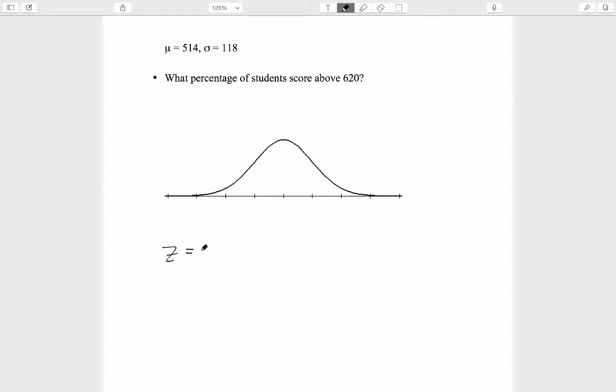First note that the z-score associated with 620 equals 620 minus 514 divided by 118. This equals 106 over 118, so this is still a little bit less than one standard deviation. It turns out to be approximately 0.90.